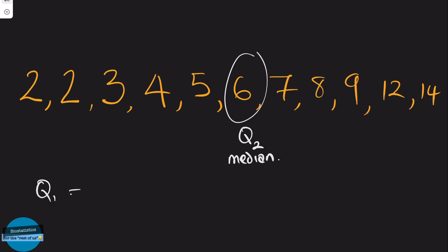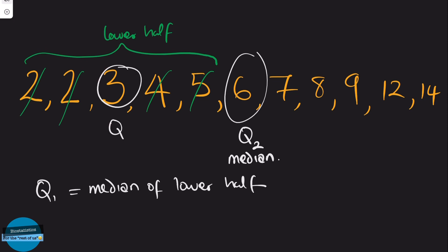Now let's go to Q1. For Q1, this is the median of the lower half of the dataset. So if we have 2 points here and 2 points there, then our middle data point is here. So our Q1, which is the first quartile, is 3.